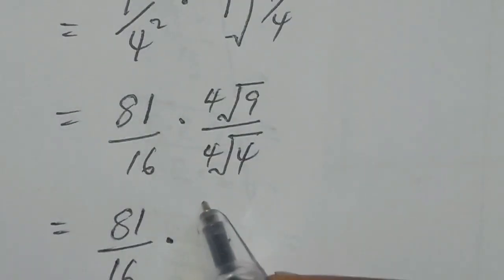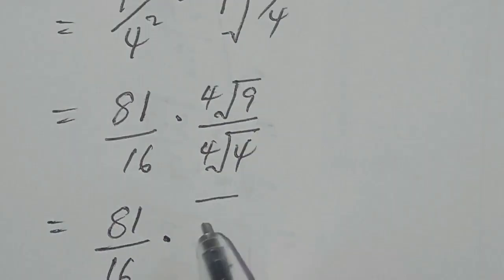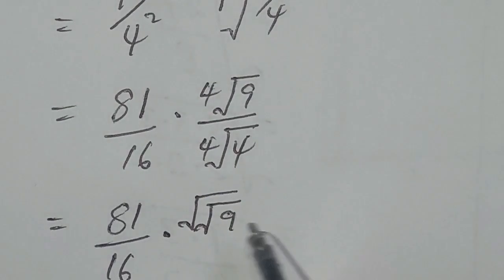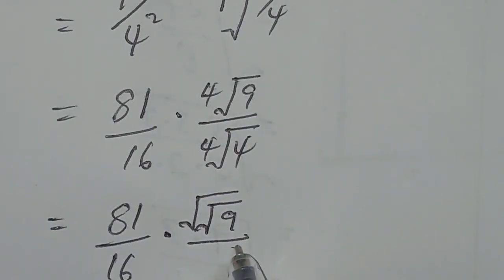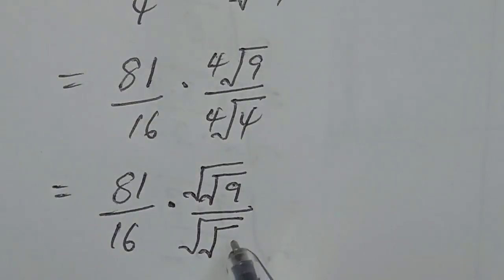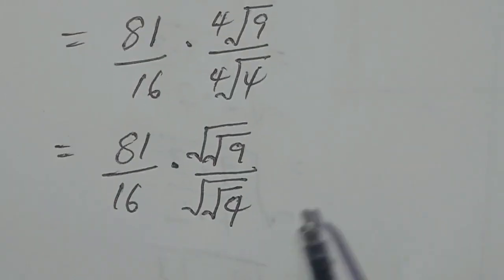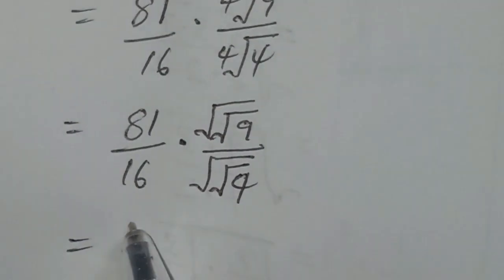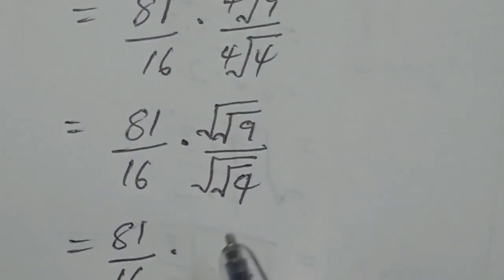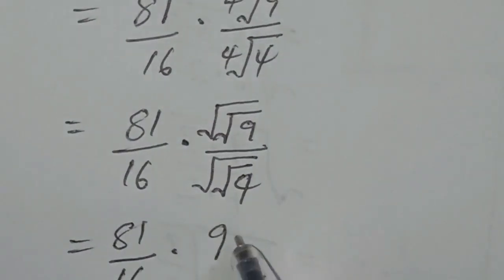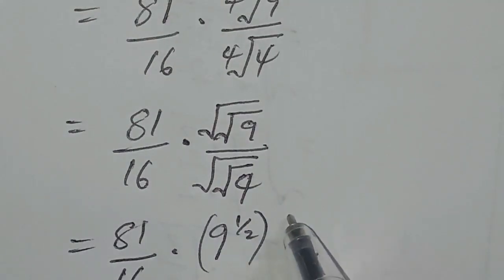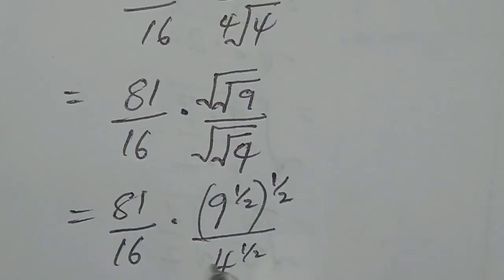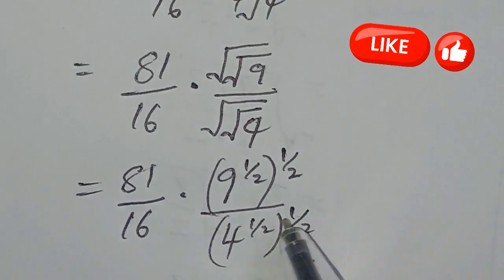This fourth root can be written as the square root of another square root. So we have 81 over 16 multiplied by the square root of the square root of 9, over the square root of the square root of 4. This means the expression equals 81 over 16 multiplied by 9 to the power of one half, all to the power of one half, over 4 to the power of one half, all to the power of one half.